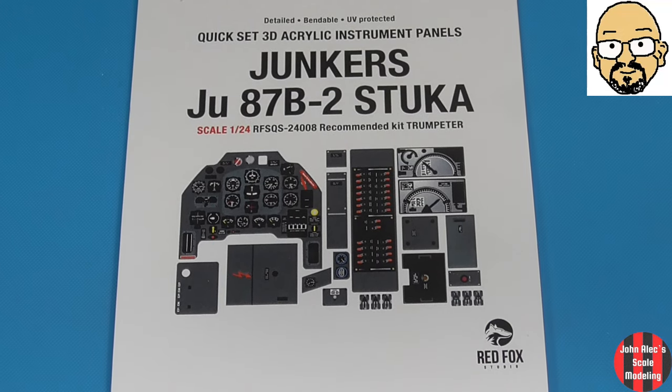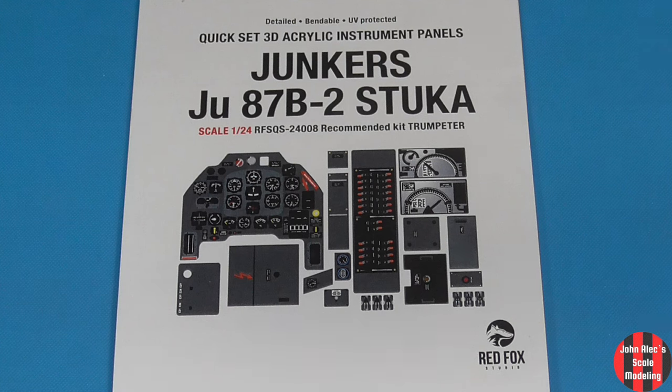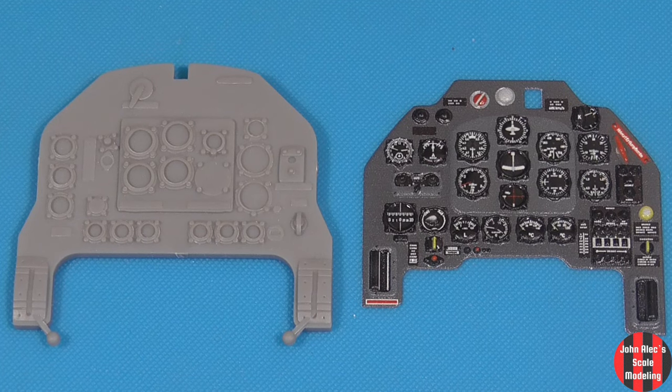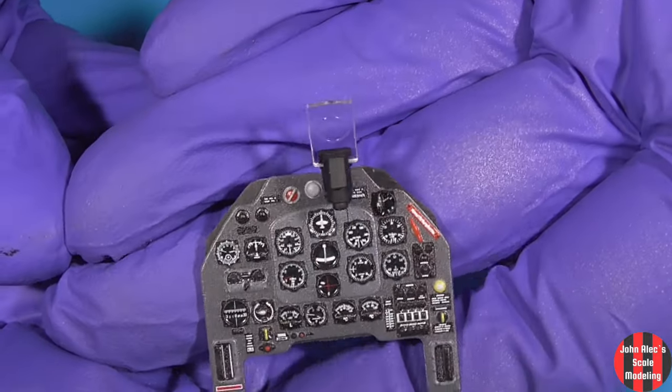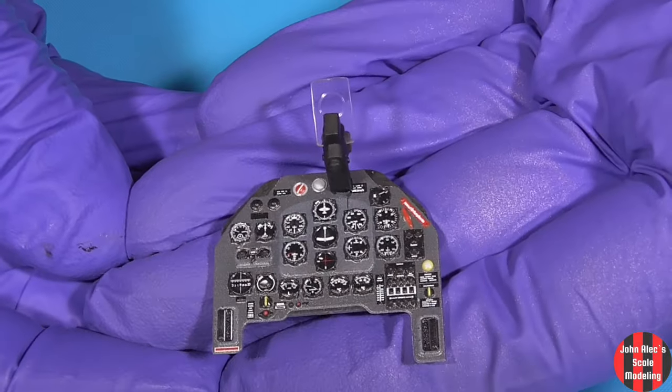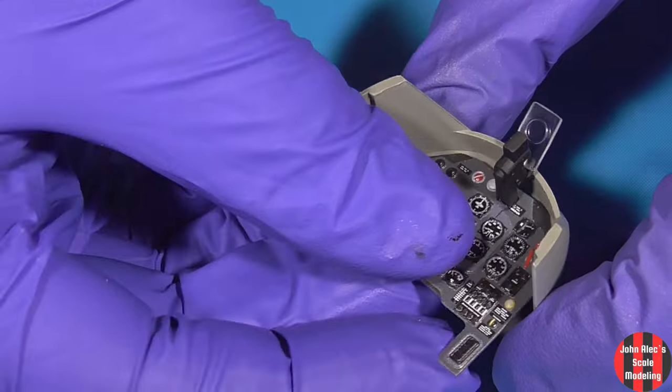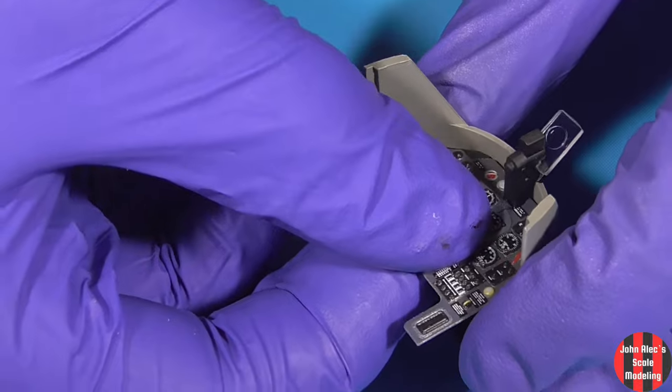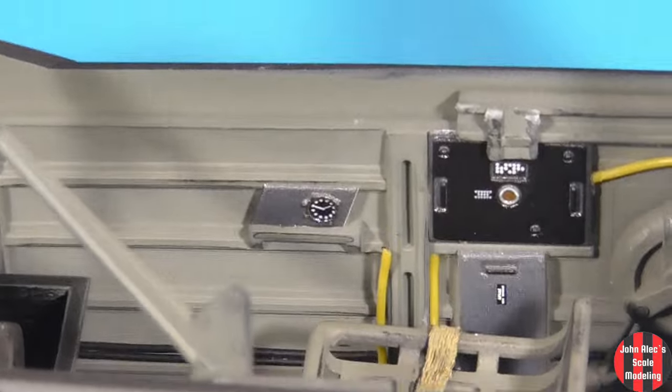Massive shout out to Nigel of Nigel's Modeling Bench. He saw my box review months ago and sent me this amazing 3D part set. Thank you so much mate, I really appreciate it. But I forgot it came with much more than the main instrument panel. I modified the kit part so I could add the 3D part for indexing. I prepped the part that takes the instrument panel. Then I chiseled away and added as much of the other parts as I could.